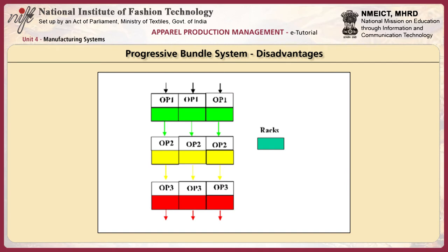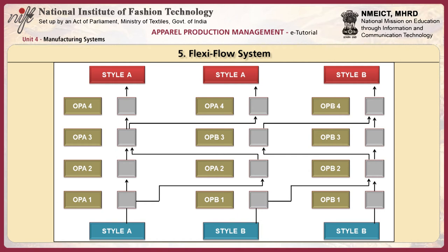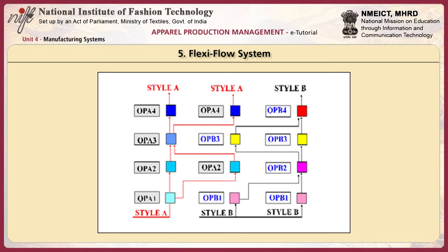The PBS — progressive bundle system — is one of the most common and widely used systems. Now let us look at another form of production system known as the flexi-flow system. It is a modified version of PBS. In the flexi-flow system, in one setup more than one style can be executed. When there are parallel lines running, any style can be produced anywhere — that is what refers to the flexi-flow system. It provides flexibility in adopting changes wherever required. As you can see in the picture, this is a good example of the flexible flow system, where a mix of colors and styles are introduced.